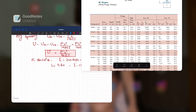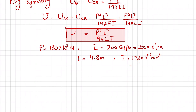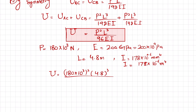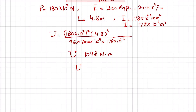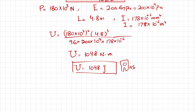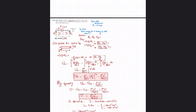With all values known, we compute U equals P²L³/(96EI): numerator is (180 × 10³)² times (4.8)³, divided by 96 times (200 × 10⁹) times (178 × 10⁻⁶). Simplifying gives U equal to 1048 Newton-meters, which equals 1048 Joules. So the total strain energy is 1048 J.